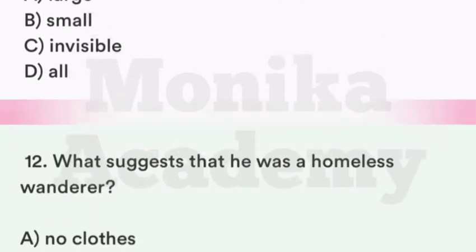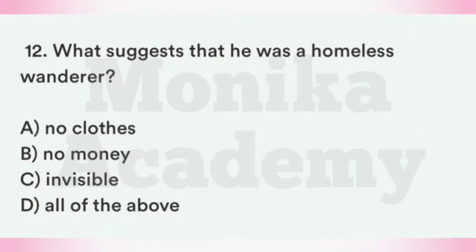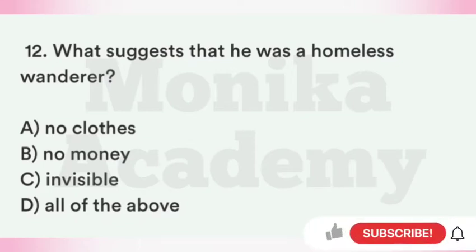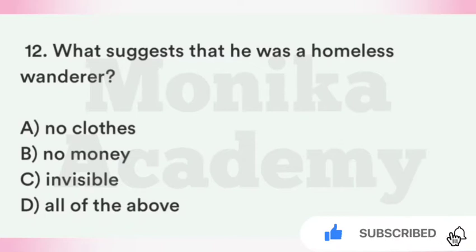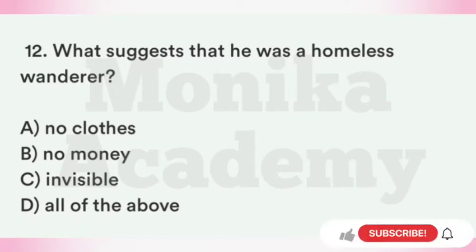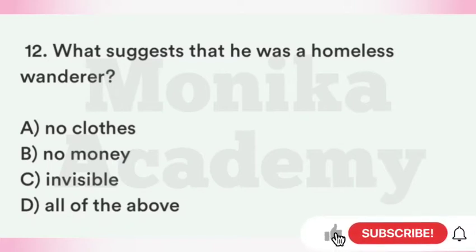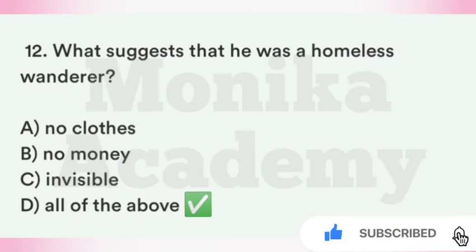Question 12: What suggests that he was a homeless wanderer? Option A: No clothes — उसके पास कपड़े नहीं थे. Option B: No money — उसके पास पैसे नहीं थे. Option C: Invisible — वो अदृश्य हो चुका था. Option D: All of the above. The correct answer is D, All of the above — Griffin के पास न कपड़े थे, न पैसे, और वो invisible भी हो गया था, यह तीनों बातें बताती हैं कि वो एक homeless wanderer था.